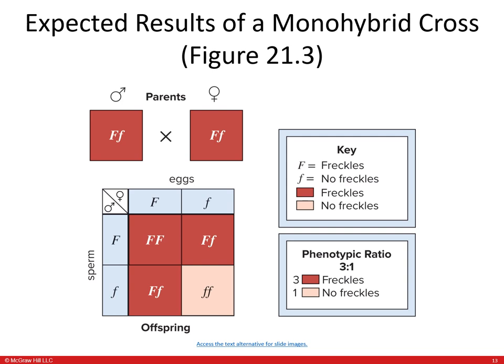To set up the Punnett square, place the mother's alleles — uppercase F and lowercase f — along the top, and the father's alleles — uppercase F and lowercase f — along the side. Then multiply: the first quadrant gives uppercase FF, the second gives uppercase F lowercase f, the third gives uppercase F lowercase f, and the last gives lowercase ff. Since having freckles is dominant, as long as you have one dominant allele you'll have freckles. In this case, three out of four offspring are going to have freckles.